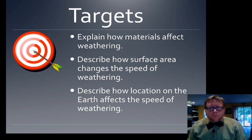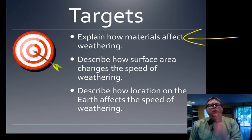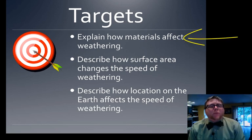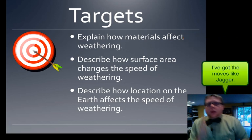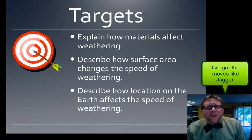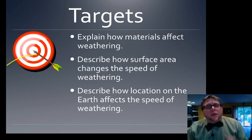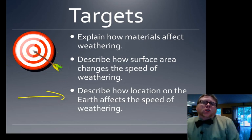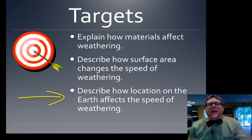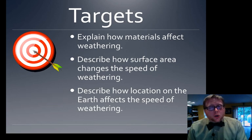Today we're going to look at three things: how the type of material affects how fast or slow it weathers, how surface area changes how weathering occurs, and how weathering changes depending on different places on Earth and how all of that comes together.